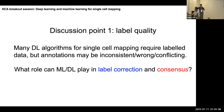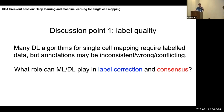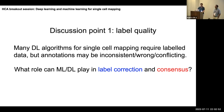A concrete example: a student used an automatic cell type mapping tool and some cell types were completely wrong — not discovered until a collaborator reviewed the data. Running a different tool gave much more correct results. Many tools lack confidence scores or probabilities, making it hard to detect errors upfront. The lung map paper was mentioned as a good test set of inconsistent labels identified during manual labeling.